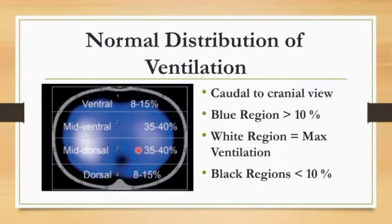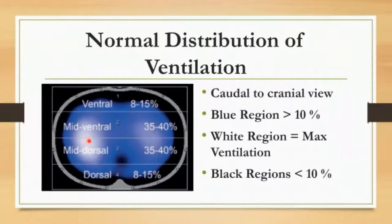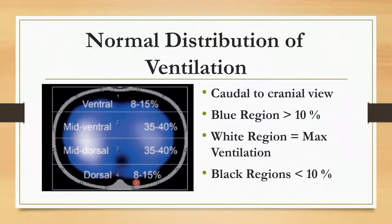For example, if there's more intensity on the right side compared to the left, that signals more tidal volume going there — you want to smooth out that white area to reduce alveolar tidal volume stress. If under 10%, you may see a black area indicating minimal ventilation — not absolutely zero, but under 10%.